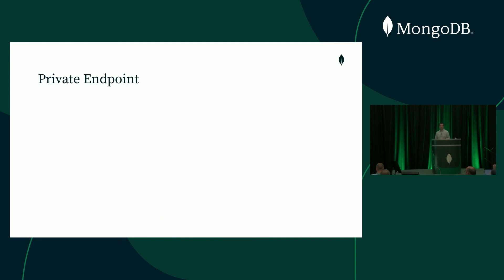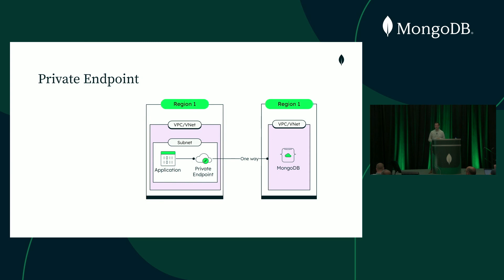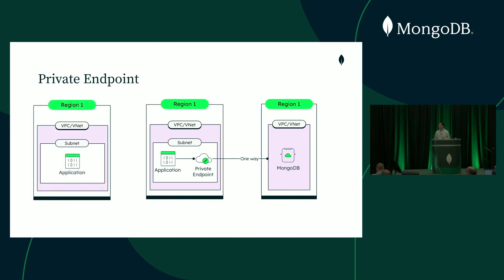The other option is private endpoints, which differ from VPC peering in that they are a one-way connection. A private endpoint gets stood up in the subnet where your application lives, and the application gets a connection string from MongoDB Atlas. That connection string resolves to the private endpoint and uses it to send the connection to MongoDB privately. The nice thing about private endpoints is that they are transitive — if another resource in a different VPC or subnet has connectivity to that private endpoint, it can also use it to reach MongoDB Atlas. This is the preferred approach we'll be using throughout our architectures today.